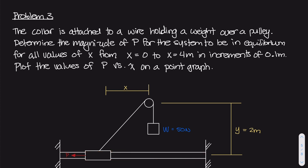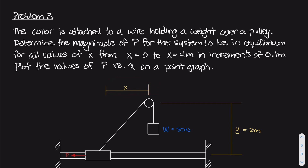There is a force P that is being applied exactly horizontal to the collar, and this force P is going to the left. The pulley is about two meters from this bar. So this bar is right here, and we have a distance to the pulley of two meters. We have also drawn this distance x from the pulley to the collar — here's the pulley, here's the collar, and that distance is x.